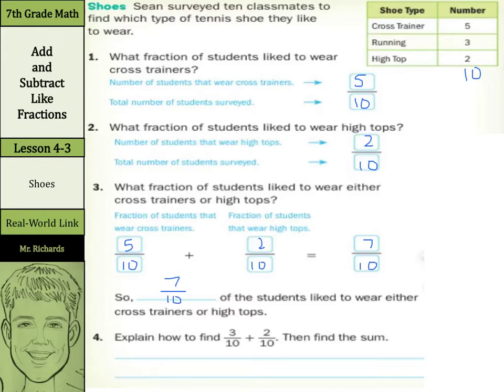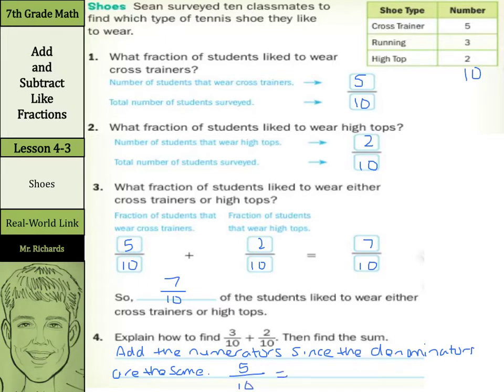Now, explain how to find 3 tenths plus 2 tenths and then find the sum. Well, in our explanation, we're going to write add. Excuse me again. This is not going to go down on the highlight reel. The hiccups keep going here. Anyways, we're going to add the numerators since the denominators are the same. We have common denominators. They're both 10. So, we can just add 3 tenths plus 2 tenths to get 5 tenths. Now, we can simplify that by dividing by 5 on top and bottom and getting 1 half.